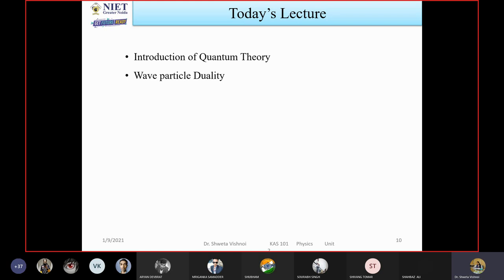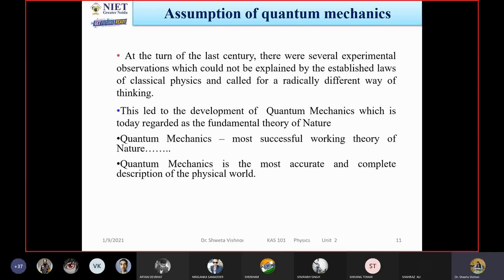At the turn of the last century, there were several experiments and observations which could not be explained by the established laws of classical physics, and called for a radically different way of thinking. This led to the development of quantum mechanics, which is today regarded as the fundamental theory of nature. Quantum mechanics is the most successful working theory — the most accurate and complete description of the physical world. We will study the basics, including the Schrödinger equation, though advanced quantum mechanics is quite difficult.